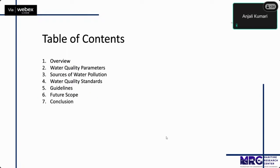Let's have a quick look at the table of contents I'm going to cover throughout the presentation: the overview of the water quality parameters, the sources of water pollution, the water quality standards set by different authorities like WHO and BIS, the guidelines I have developed after my research, the future scopes of these guidelines, and the conclusions.